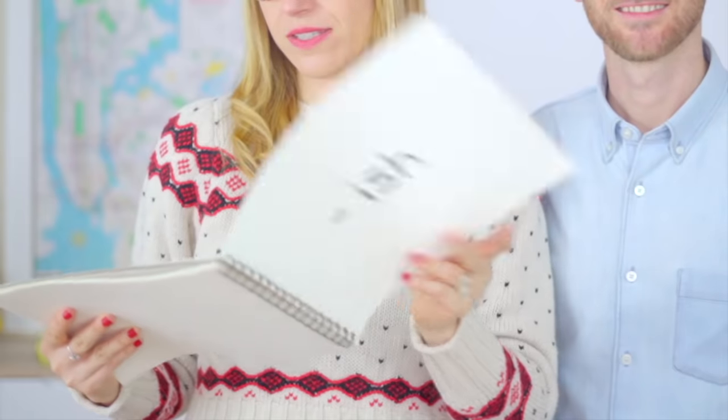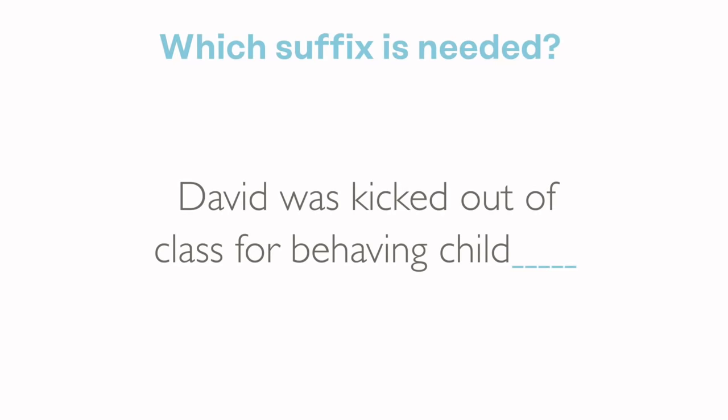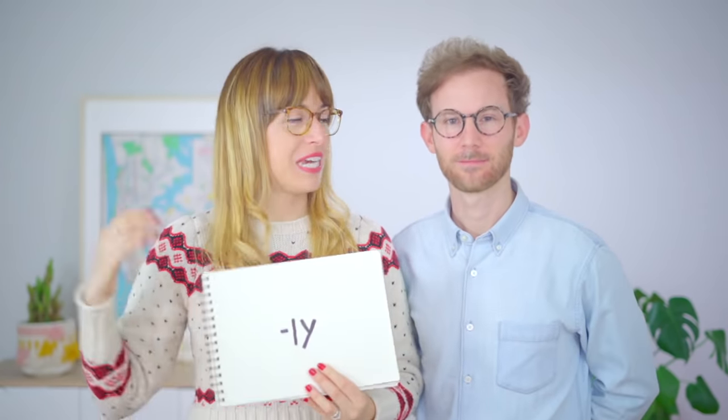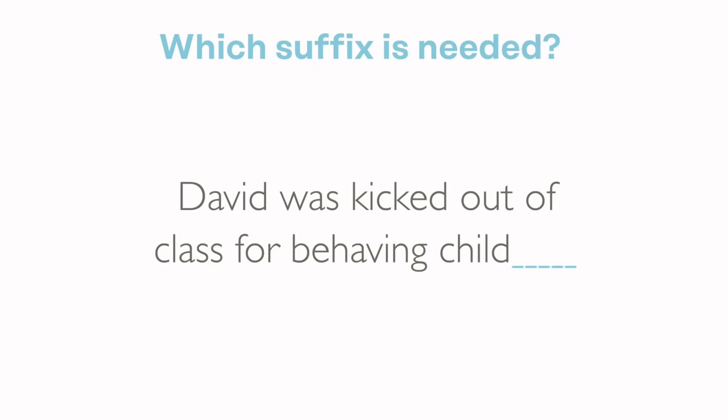Let's see what's next. This is a good one, very common. What would you put in this gap? 'David was kicked out of class for behaving child...' Infantilmente, inmaduramente, ¿no? ¿Te acuerdas cuál es el sufijo que equivale a -mente en inglés? It's -ly. So David was kicked out of class for behaving childishly. Childishly — de manera infantil.